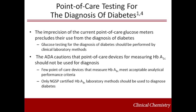Although most portable meters use whole blood and have been programmed to report a plasma glucose concentration, the imprecision of the current meters precludes their use from the diagnosis of diabetes. Although attractive because of convenience, ease, and accessibility, testing with portable glucose meters would generate many false positives and false negatives. For hemoglobin A1C, the ADA cautions that point-of-care devices for measuring hemoglobin A1C should not be used for the diagnosis of diabetes. Although several point-of-care hemoglobin A1C assays are NGSP certified, the test is waived in the United States and proficiency testing is not necessary.